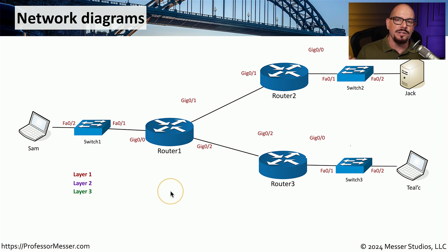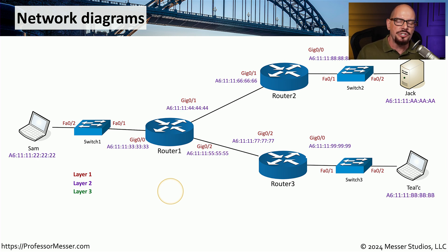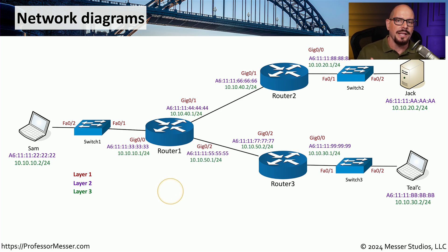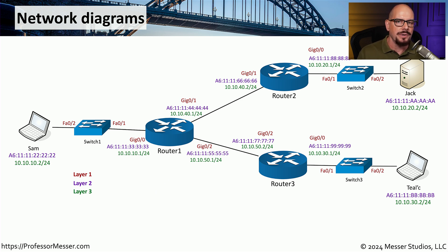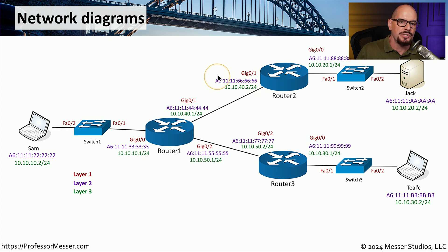We can overlay on top of that a layer 2 perspective, which now includes MAC addresses for all of these different components. And if you wanted to include IP addresses, we can overlay the layer 3 addresses so that you know exactly what IP address is associated with which MAC address, which is also associated with each physical address.